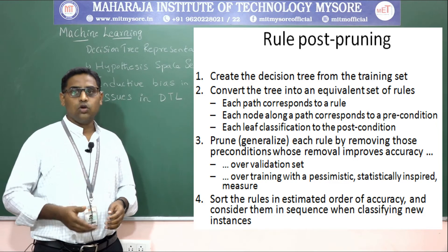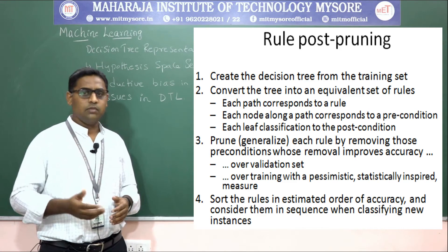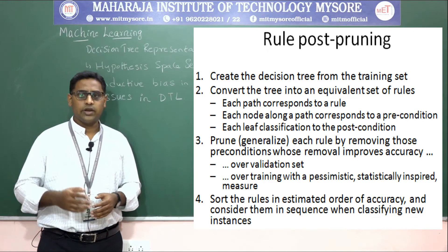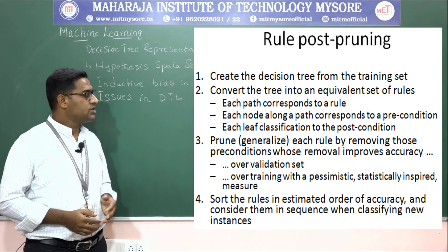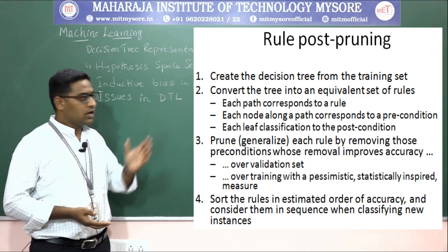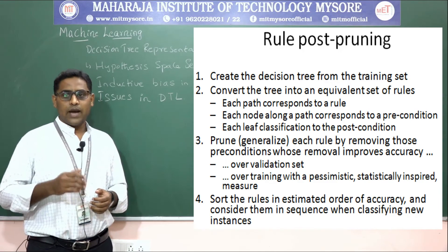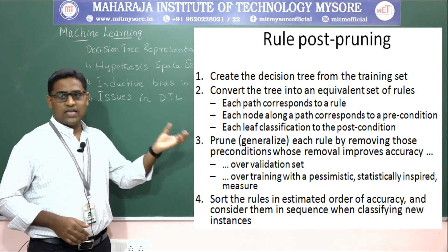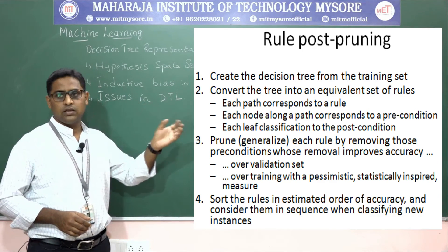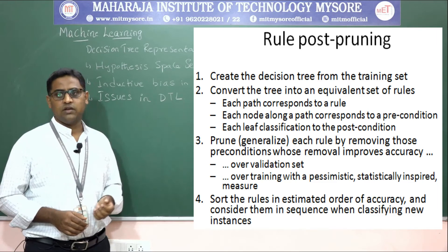The second pruning method is rule post pruning, which has four steps. First, create the decision tree from the training set. Second, convert the tree into equivalent sets of rules — each path corresponds to a rule, each node along the path corresponds to a precondition, and each leaf classification corresponds to the post condition.